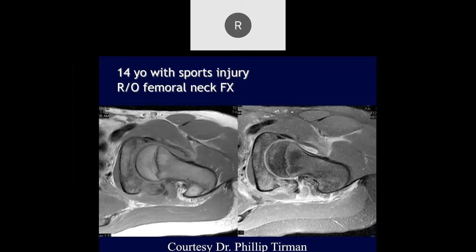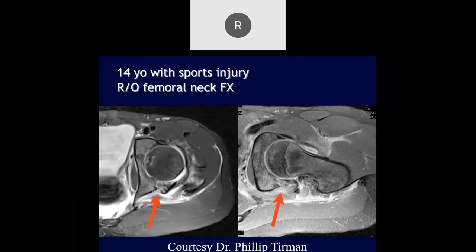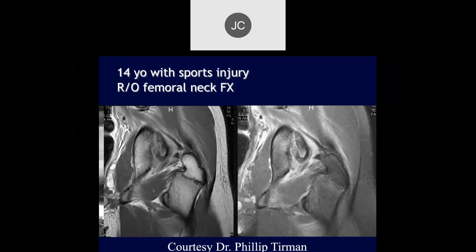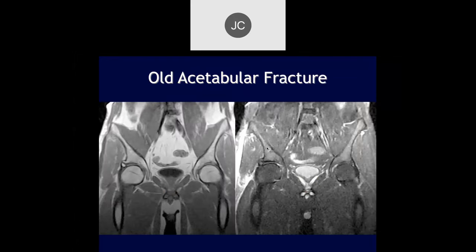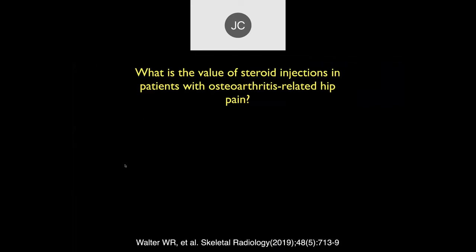14-year-old with sports injury, rule-out femoral neck fracture. The femoral head looks okay, but the posterior acetabulum looks like there's a mildly displaced fracture with a lot of surrounding soft tissue edema. It's an unstable fracture. Also shown is an old acetabular fracture with an os acetabuli adjacent to it.